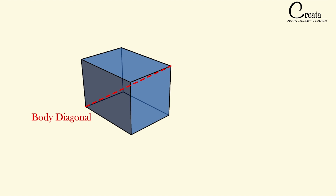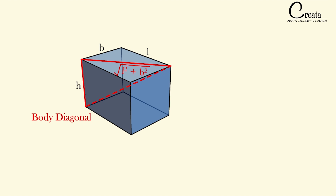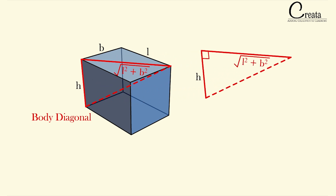Let's see how to approach the body diagonal. First, take the bottom face diagonal with dimensions L and B, giving us the face diagonal as √(L² + B²). Now, the height H and this face diagonal form a right angle triangle with the body diagonal as the hypotenuse. It is slightly angular but it is a right angle triangle.